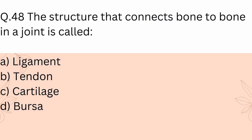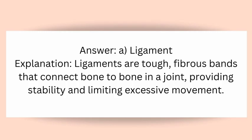Question 48: The structure that connects bone to bone in a joint is called? A) Ligament, B) Tendon, C) Cartilage, D) Bursa. Answer: A) Ligament. Explanation: Ligaments are tough, fibrous bands that connect bone to bone in a joint, providing stability and limiting excessive movement.